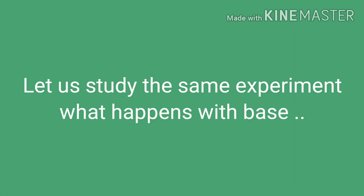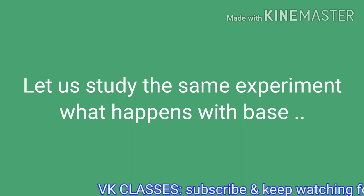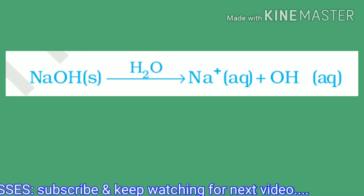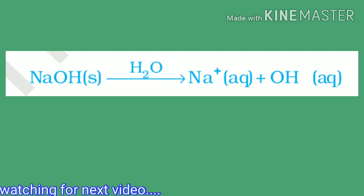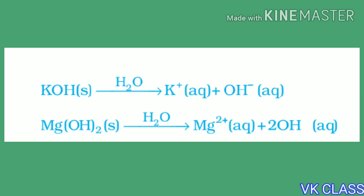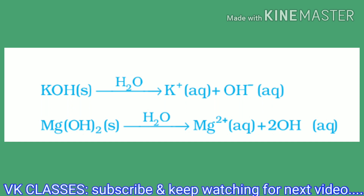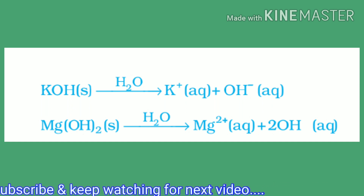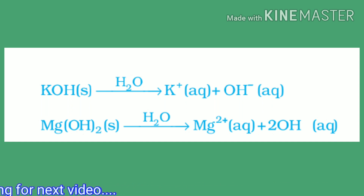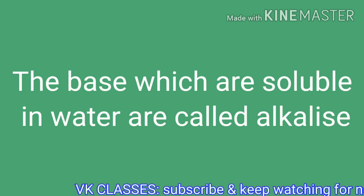Now let us see what happens when a base is taken. When sodium hydroxide reacts with water, it gives sodium ions plus hydroxide (OH⁻) ions. Similarly, potassium hydroxide and magnesium hydroxide also react with water and generate hydroxide (OH⁻) ions. Bases which are soluble in water are called alkalis.